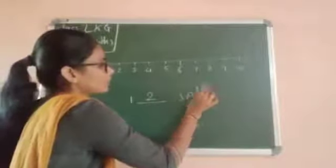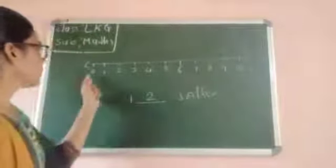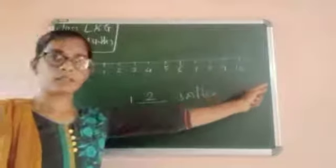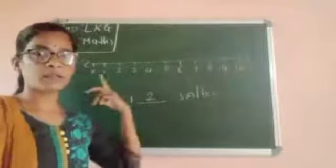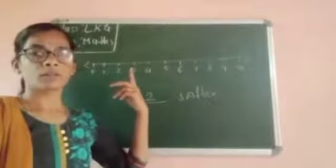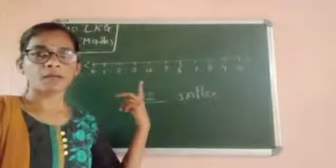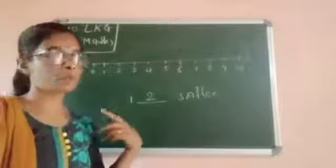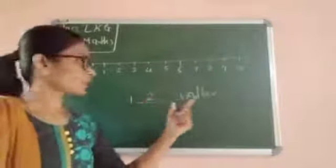After number — when we go to the front, that is called an after number. When we come back, that is called a before number. When we go down and go forward, we call it an after number. When we come back with that number, we call it a before number.